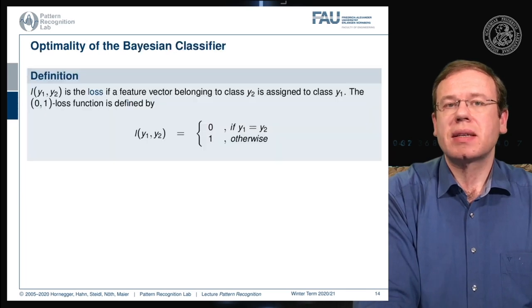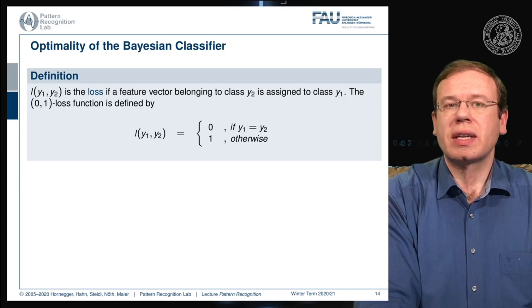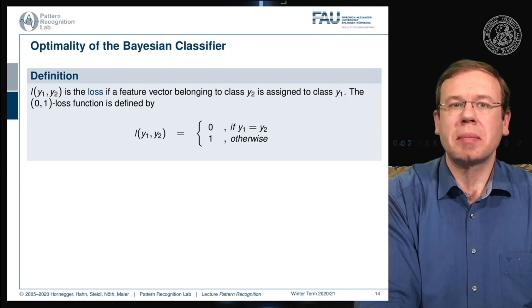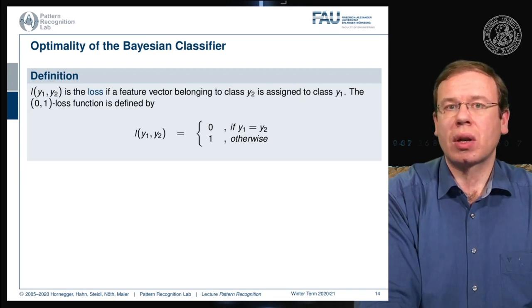Let's look a bit into the optimality of the Bayesian classifier. If you attended introduction to pattern recognition you already have seen the formal proof that the Bayesian classifier is the optimal classifier if you have a zero-one loss function and a false decision.